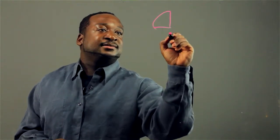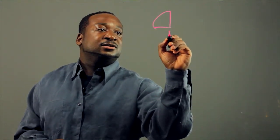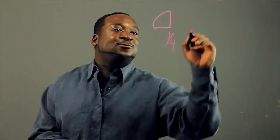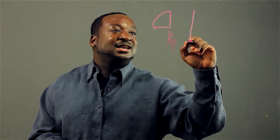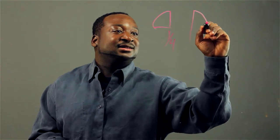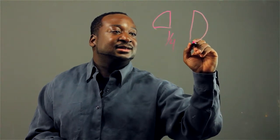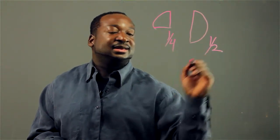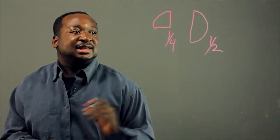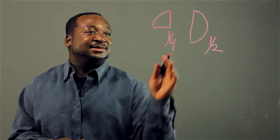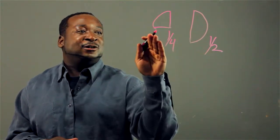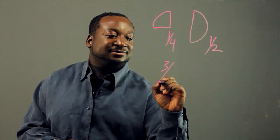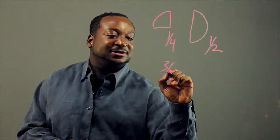This would represent one-fourth, and we want to add that to one-half. We'll set up our second pie chart. And we can clearly see that one-fourth plus one-half equals three-fourths.